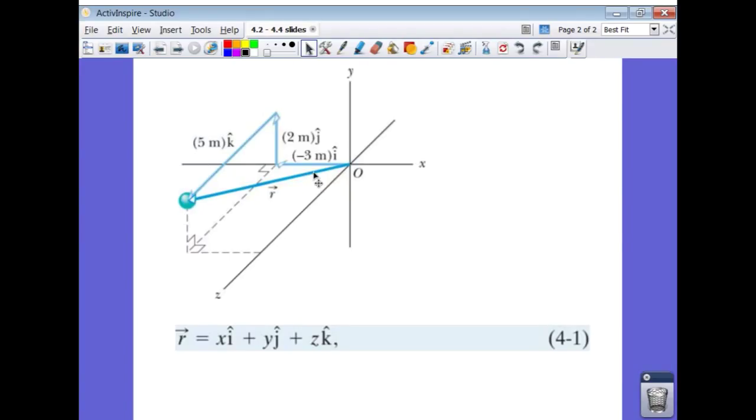So in this case, my position vector would be, the head of the vector would be located at negative three in the x, positive two in the y, and positive five in the z. And using unit vector notation, our r vector, which is the vector that begins at the origin and goes to that point in space, it has an x component, a y component, and a z component.